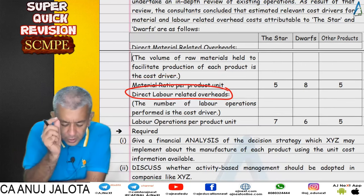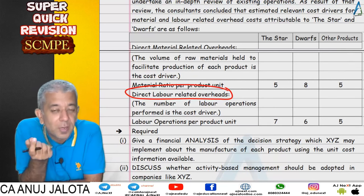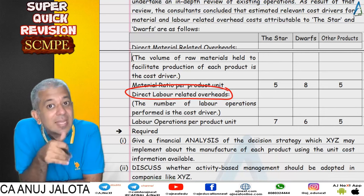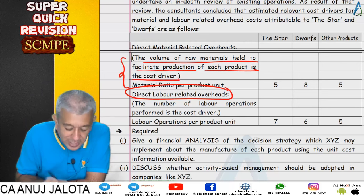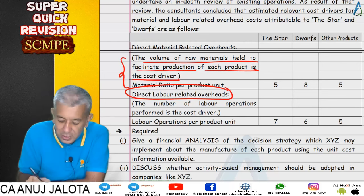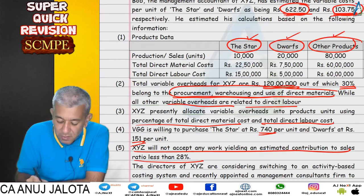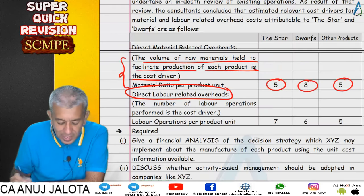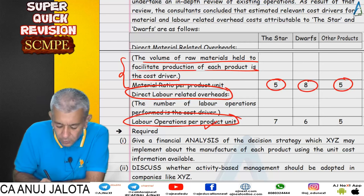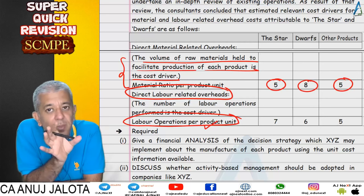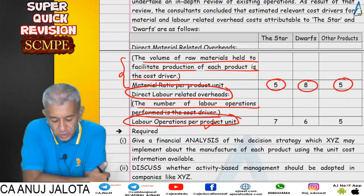The material ratio per unit — how much material is required for each unit — is the cost driver. The volume of raw material held to facilitate production of each product is given per unit, so you multiply by number of units to get the total cost driver for that 30 percent cost, which is 1.2 crores × 30 percent. Similarly, labor operations per unit were given; multiply by number of units — the number of labor operations performed is the cost driver.